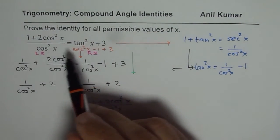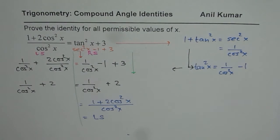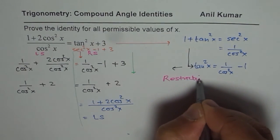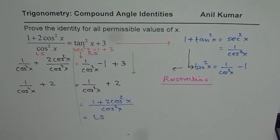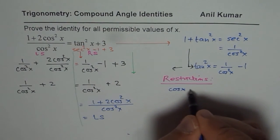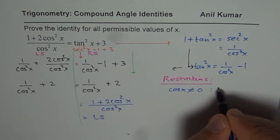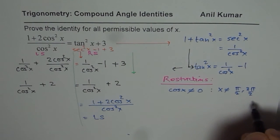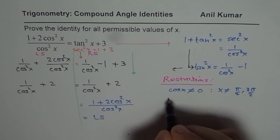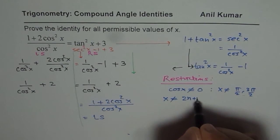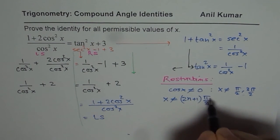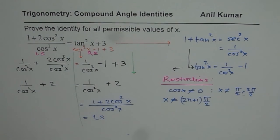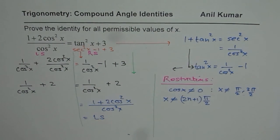Now let's talk about restrictions. One restriction is that cos x cannot equal 0, which means x cannot equal π/2 or 3π/2. In general, x is not equal to (2n + 1)π/2. That is the restriction on this identity — remember it if asked.